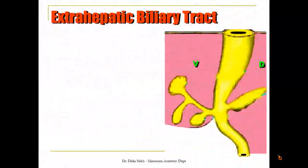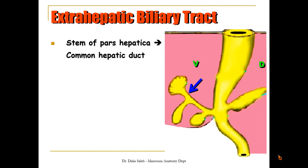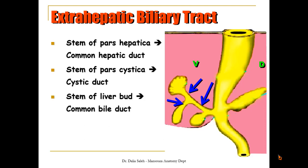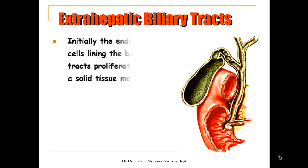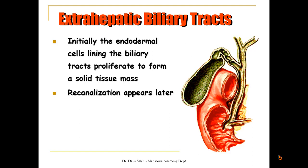For the extra-hepatic biliary tract development, the stem of pars hepatica will form the common hepatic duct, the stem of pars cystica will form the cystic duct, and the stem of the liver bud itself will form the common bile duct. Like any development of a duct or tube inside the GIT, initially the endodermal cell lining proliferates to form a solid cord, then re-canalization appears later. If there is improper re-canalization, anomalies appear.